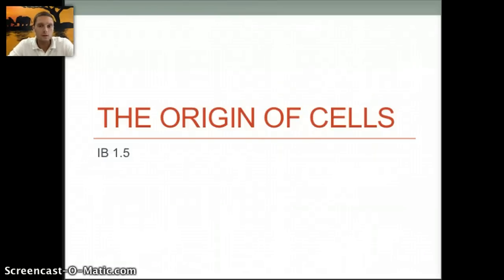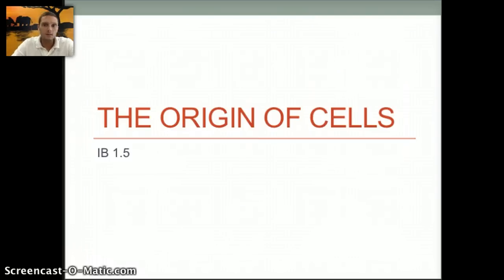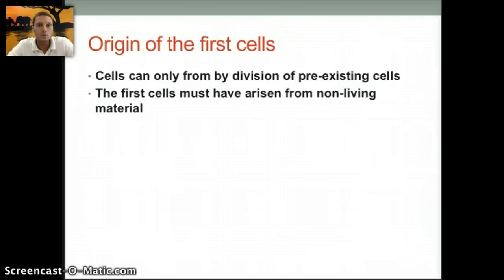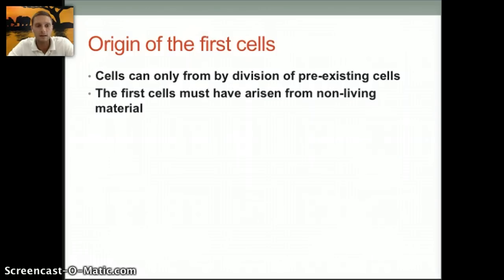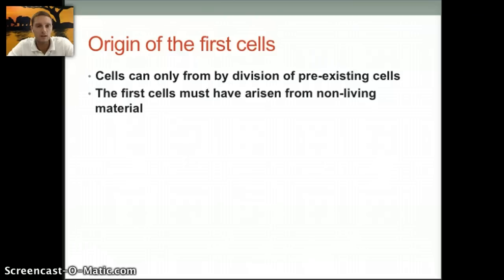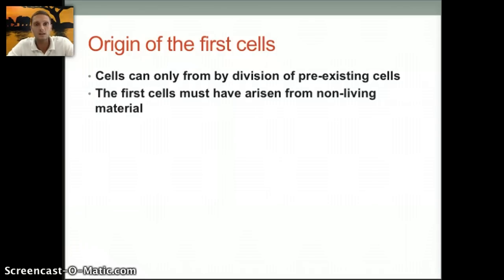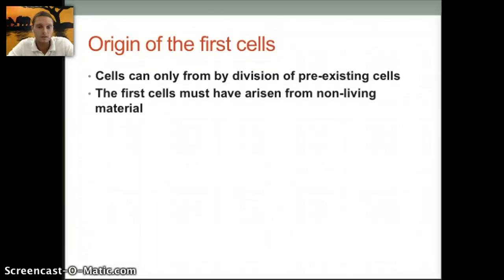In this video we're going to talk about the origin of cells, which will be the last in our first unit. This is IB section 1.5. The origin of cells is an interesting question and one that we don't entirely have answers for. There's a lot of evidence and many experiments have been done, but we don't know exactly. I'm going to talk about some of the ideas and ways we think the first cells may have originated based on the evidence we currently have, which can change as new information emerges.